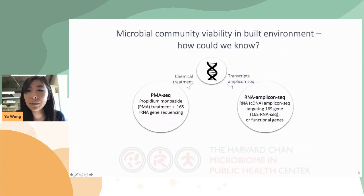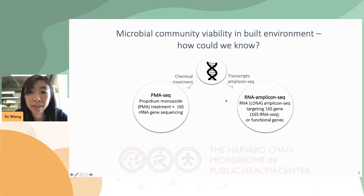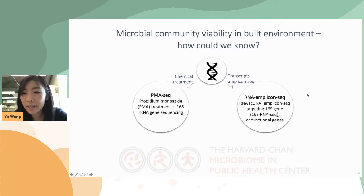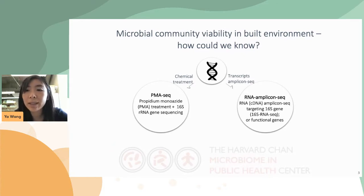To characterize only the viable microbial communities at scale, previous studies have established several high-throughput sequencing variants, including 16S amplicon sequencing combined with chemical treatment using propidium monoazide — the PMASeq — or amplicon sequencing targeting transcripts from 16S rRNA genes, the 16S RNA-seq. While these assays have been used to profile viable communities, their accuracy had not been evaluated previously. The purpose of this study is to provide a systematic evaluation of these measurements.